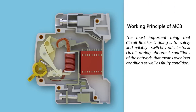Working principle of circuit breaker: The most important thing that a circuit breaker does is to safely and reliably switch off an electrical circuit during abnormal conditions of the network — that means overload conditions as well as faulty conditions.